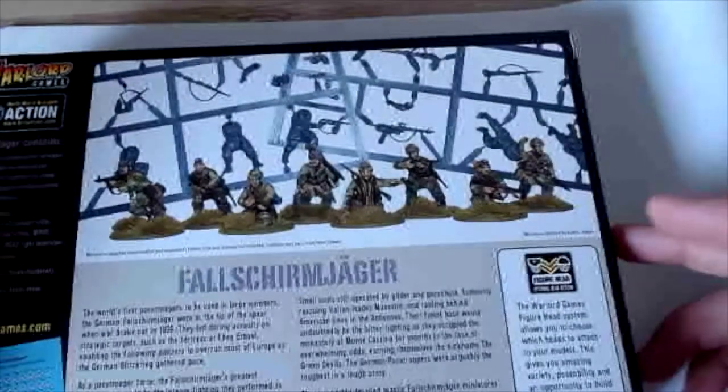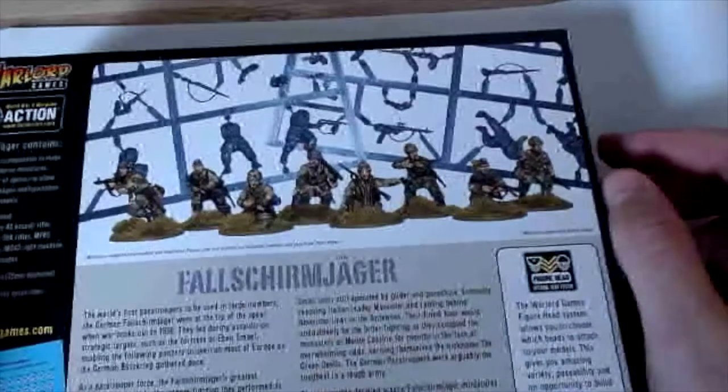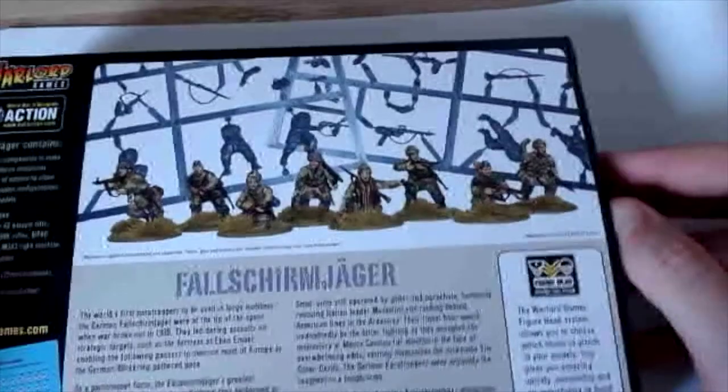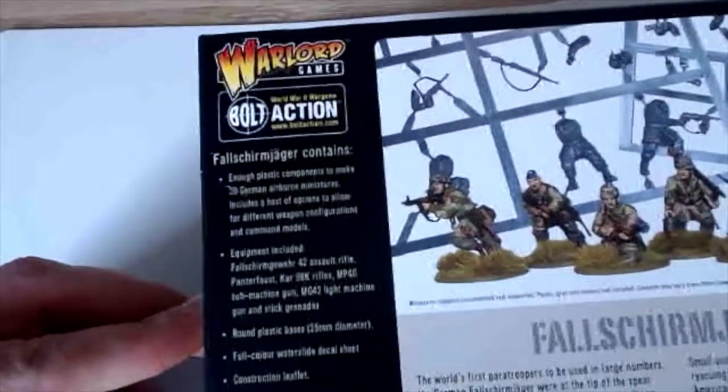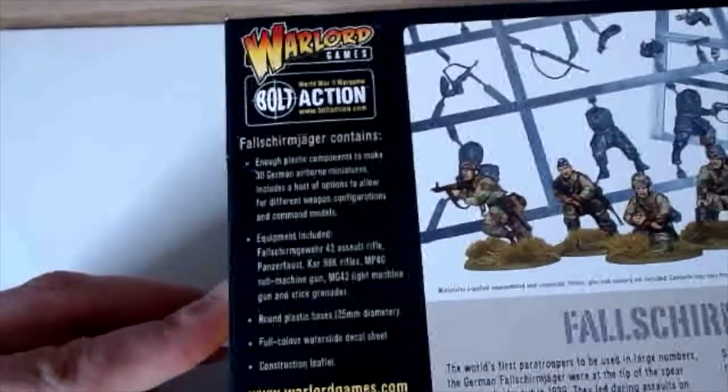Once this is off, have a look at the box again. What the Fallschirmjäger has is 30 hard plastic 28mm multi-pose miniatures. Now you get like 30 pairs of legs and arms and torsos.